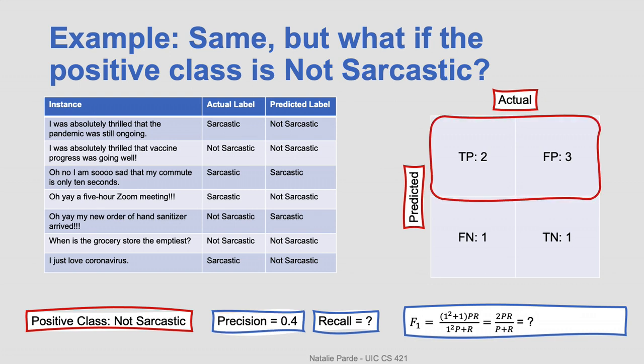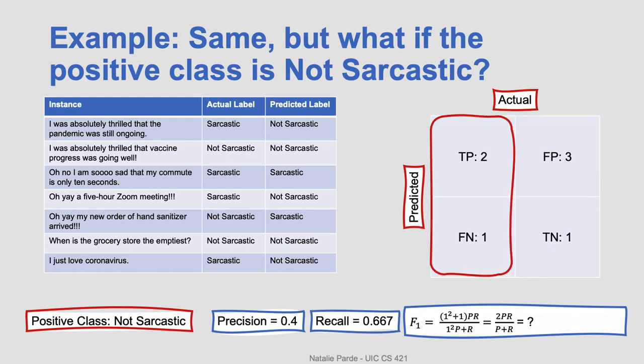With this new confusion matrix, our precision is two divided by five or 0.4. Our recall is two divided by three or 0.667. These new precision and recall values mean that our new F-one has a numerator of two times 0.4 times 0.667, and a denominator of 0.4 plus 0.667. This actually ends up resulting in an F1 of just ever so slightly above 0.5. So still not great, but our model is functioning a bit better as a non-sarcasm detector than it is as a sarcasm detector.